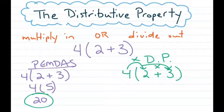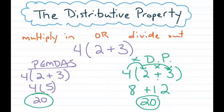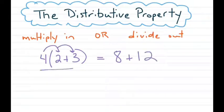I'll still get the same answer of 20 by distributing. So 4 times 2 is 8, keeping the addition sign in between, and 4 times 3 is 12. And 8 plus 12 is still 20. So rather than doing the parentheses inside first, you took the 4 outside and distributed it to both items inside the parentheses. That's the distributive property using multiplication. So 4(2 + 3) is equivalent to 8 plus 12 — those are two equivalent expressions using the distributive property.